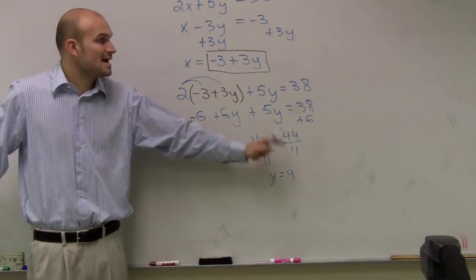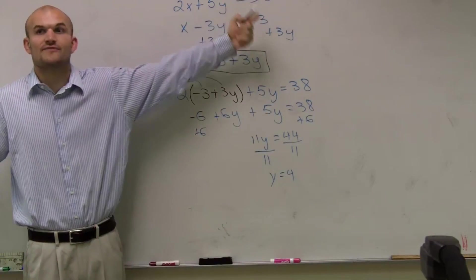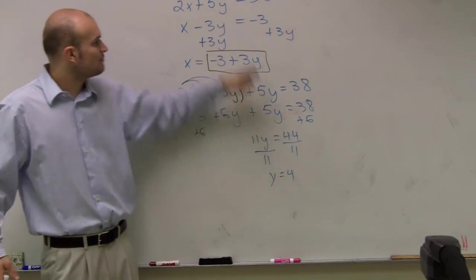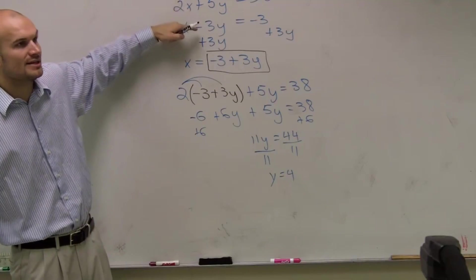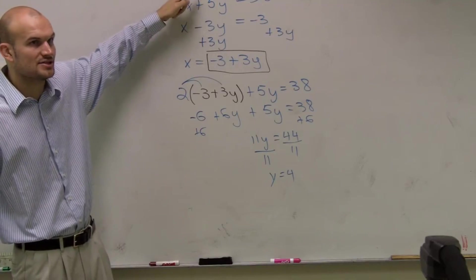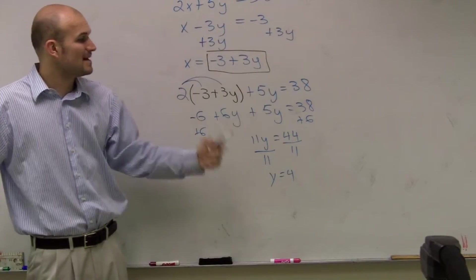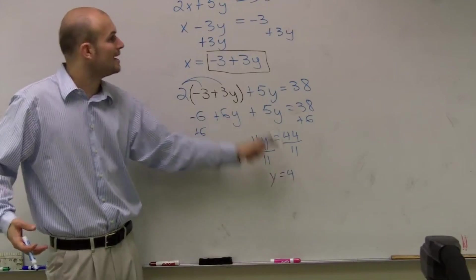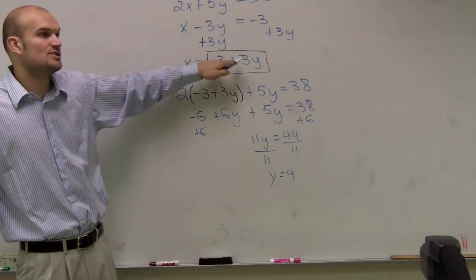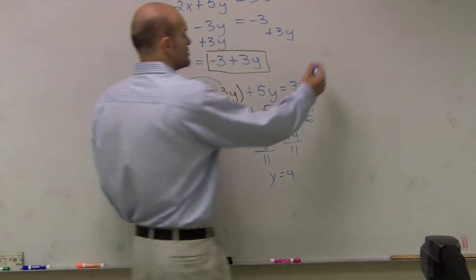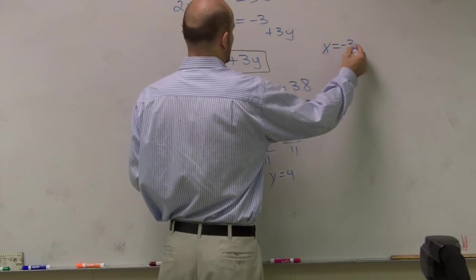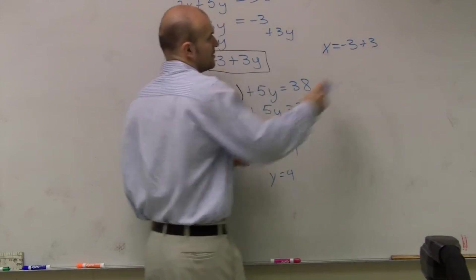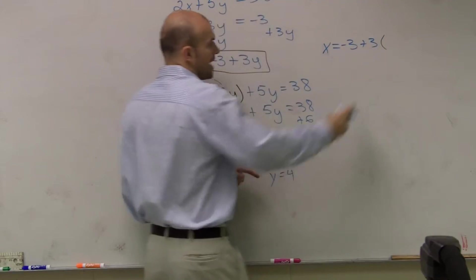Now I know what my value of y is. I can plug that back into my equation to find the value of x. And it's important, you can plug your y into either one of these, but once you plug y into one of these equations, you then have to solve for x again, Roslyn. So the best thing to do is to take that value of y and plug it back into the equation when it's already solved for x. So now I can say x equals negative 3 plus 3 times my value of y, which is 4.